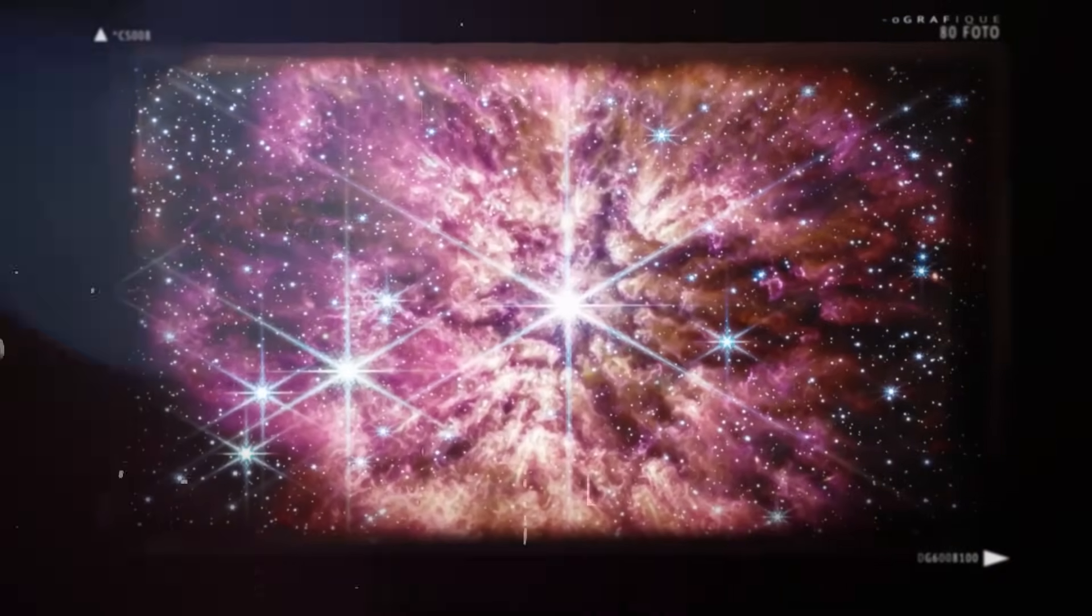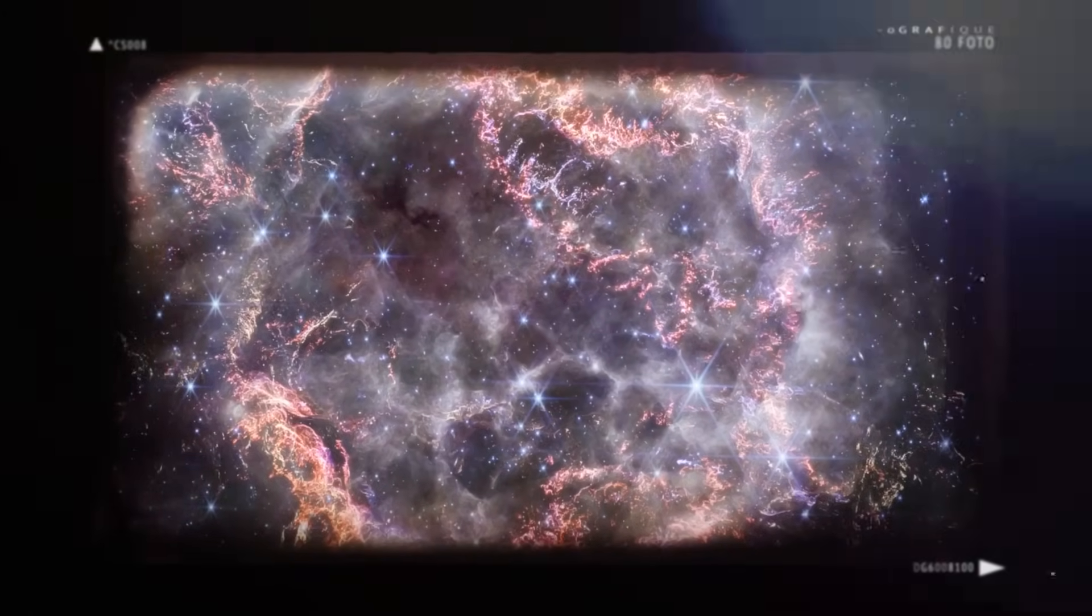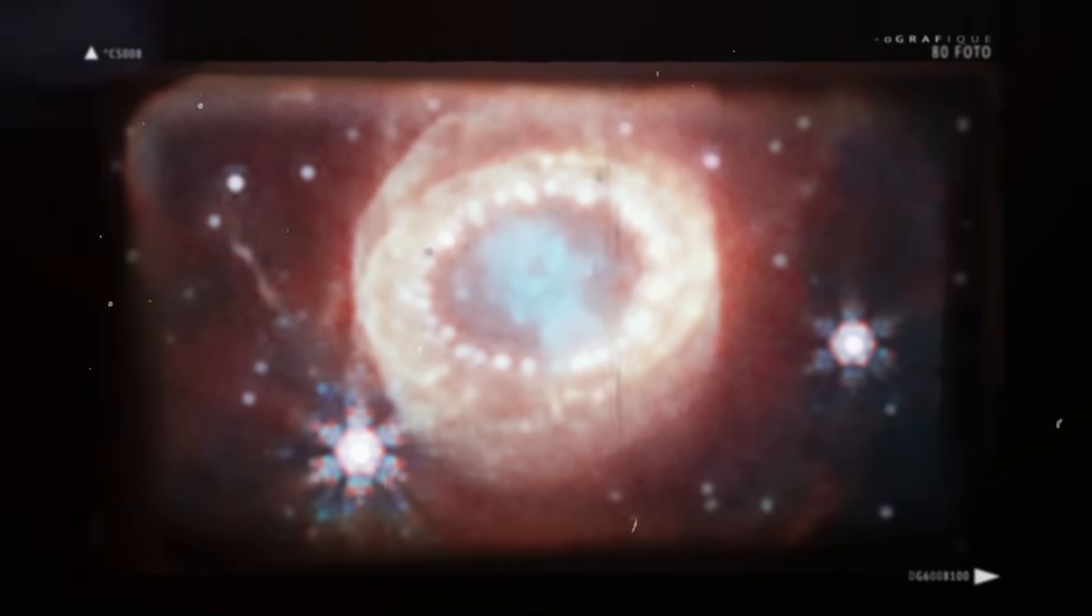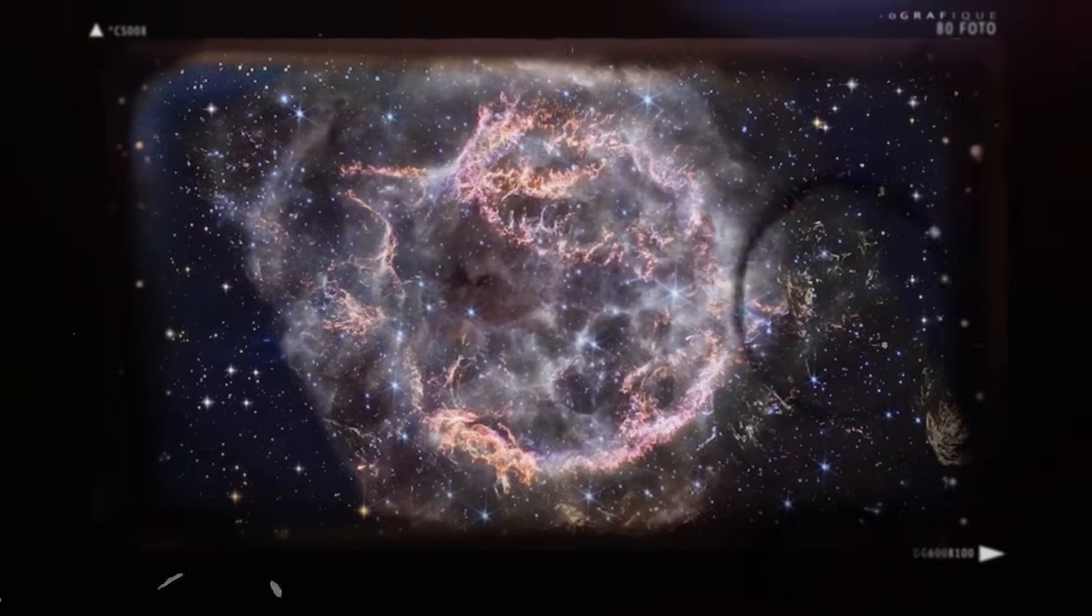For instance, just a few weeks ago, James Webb spotted the remains of a supernova explosion in a new light. The remnants, called Cassiopeia A, or Cas A for short, lie 11,000 light-years from Earth in the constellation Cassiopeia.